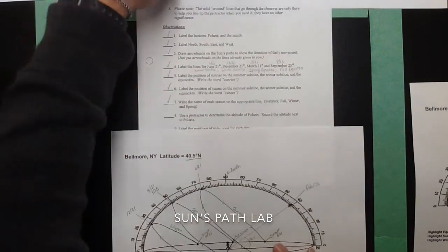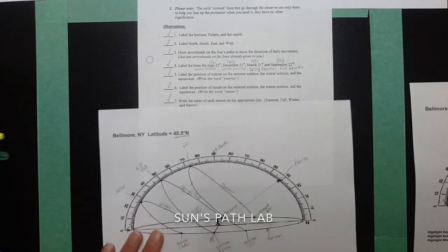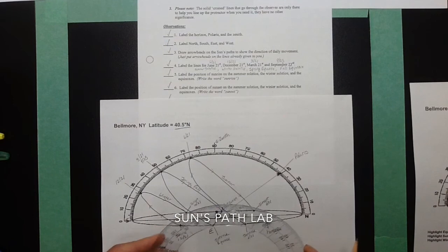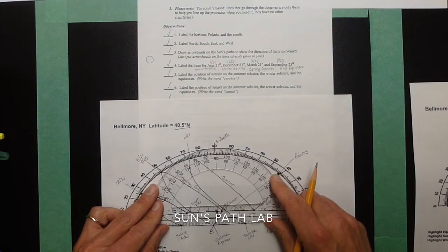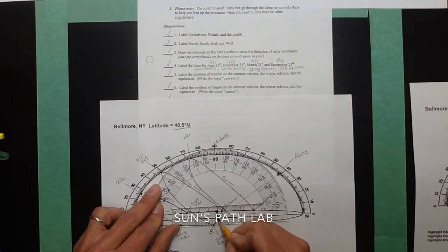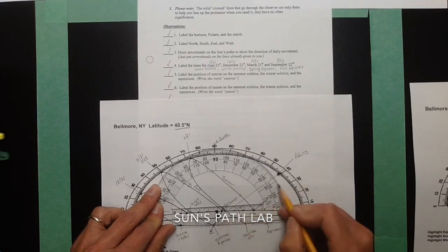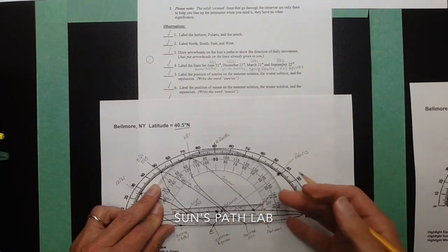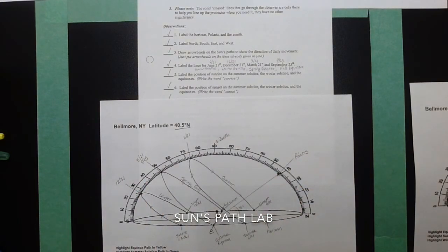So, eight says use a protractor to determine the altitude of Polaris and record the altitude next to Polaris. All right. So, I already drew the line earlier. To use the protractor, I want to put this here. I'm going to line that up. My line, the vertex of my line has to be directly there. And this protractor doesn't work with the lab because the drawing must be skewed. So, I don't actually need the protractor. Sorry about that.